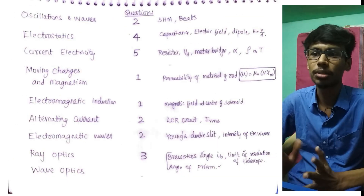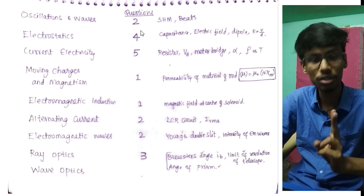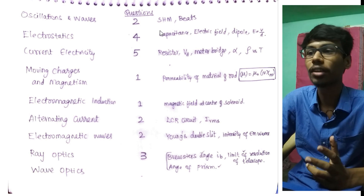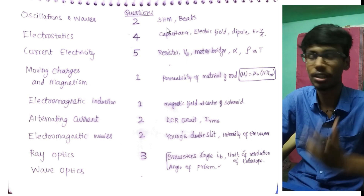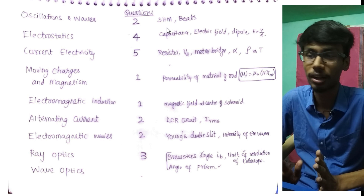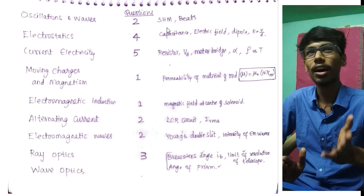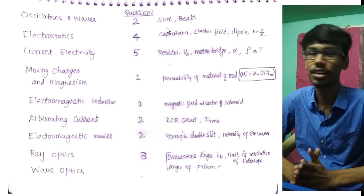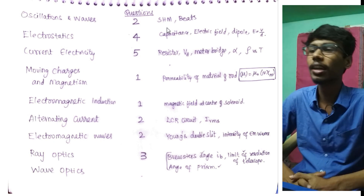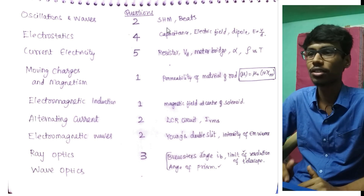So we can see all the questions — easy questions, direct questions, direct formula questions, formula-based questions, application-based questions. Next: Oscillations and Waves — two questions. The most high-yield topic is Simple Harmonic Motion. The phase difference between displacement and acceleration — very simple answer. Then beats — there is a question. That is Class 11 physics chapter-wise weightage of questions for NEET 2020.